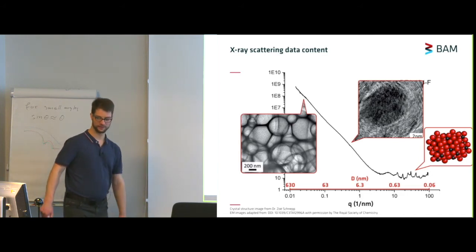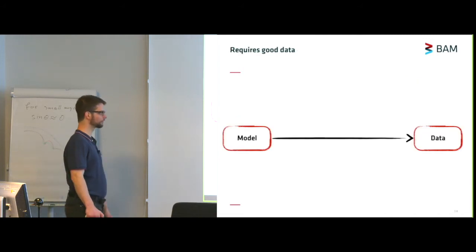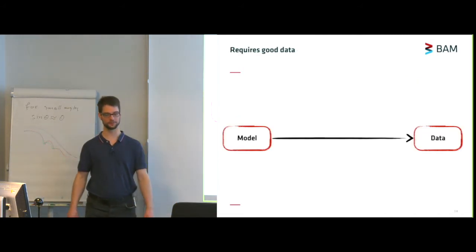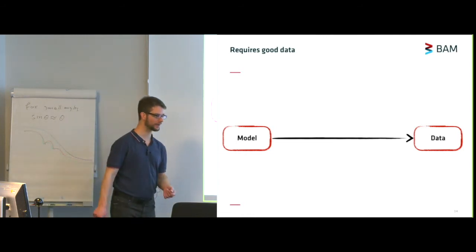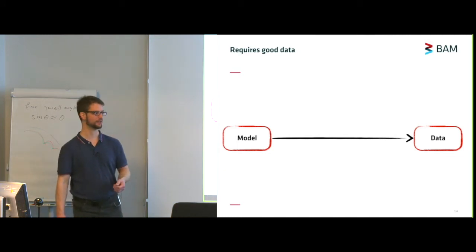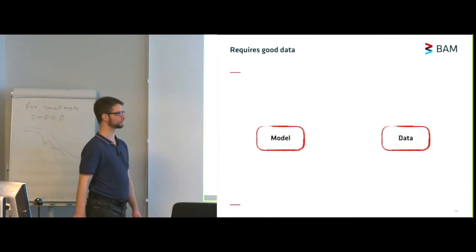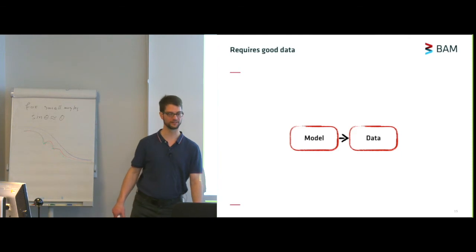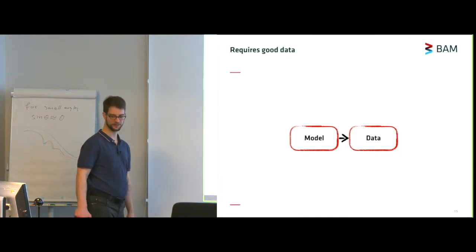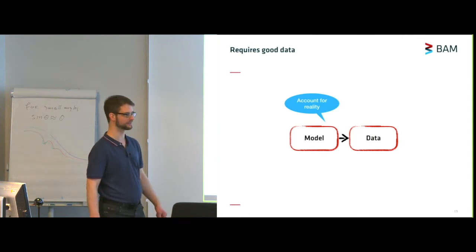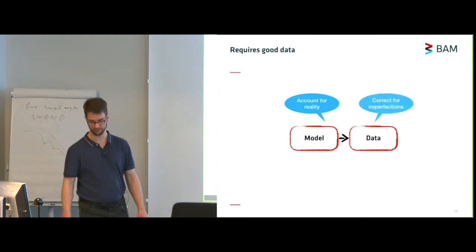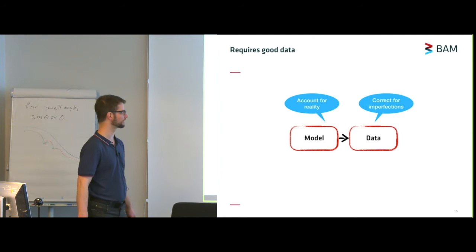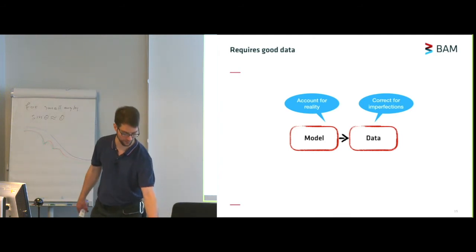Now you'd like to analyze this. And for most analyses, this means that you need to correlate a model with your data. So you need to describe your real structure as best you can with a model, so that it can describe your data after adjustment of some parameters. This, of course, works better if you can bring the model closer to your data and your data closer to reality. That means you need, in your model, to account for reality such as beam sizes and multiple scattering. And for the data, you need to correct these as much as possible for the imperfections that we have in our data collection.